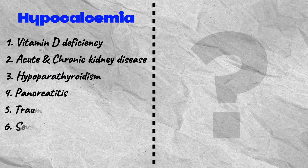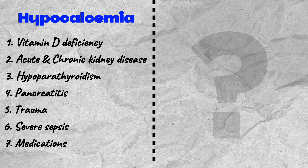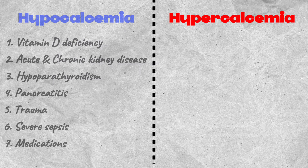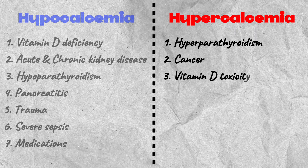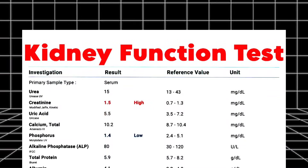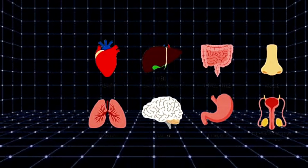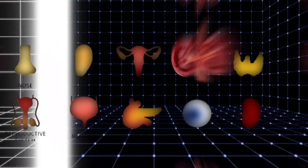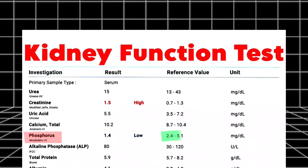Low calcium levels, known as hypocalcemia, are seen in vitamin D deficiency, acute and chronic kidney disease, hypoparathyroidism, pancreatitis, trauma, severe sepsis, and due to certain medications. High calcium levels, known as hypercalcemia, are seen in hyperparathyroidism, cancer, vitamin D toxicity, dehydration, and genetic conditions.